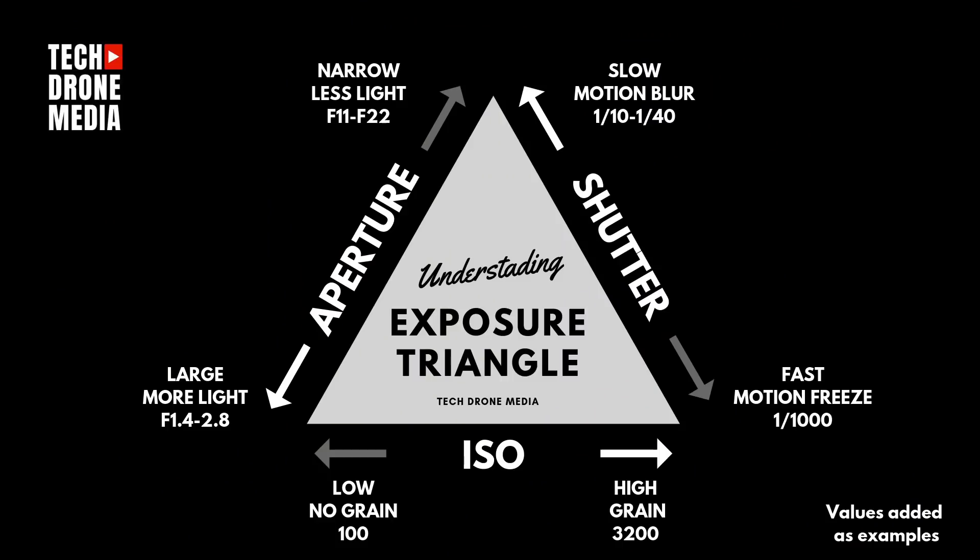Mastering the exposure triangle will not only affect the exposure of your image — you can change the look and feel as well. You could go as far as saying that you could dramatically change the appearance of your footage by changing one of the parameters in the exposure triangle. Because shutter speed, aperture and ISO are linked, changing one of the parameters means the two others will have to be changed accordingly to keep your exposure.